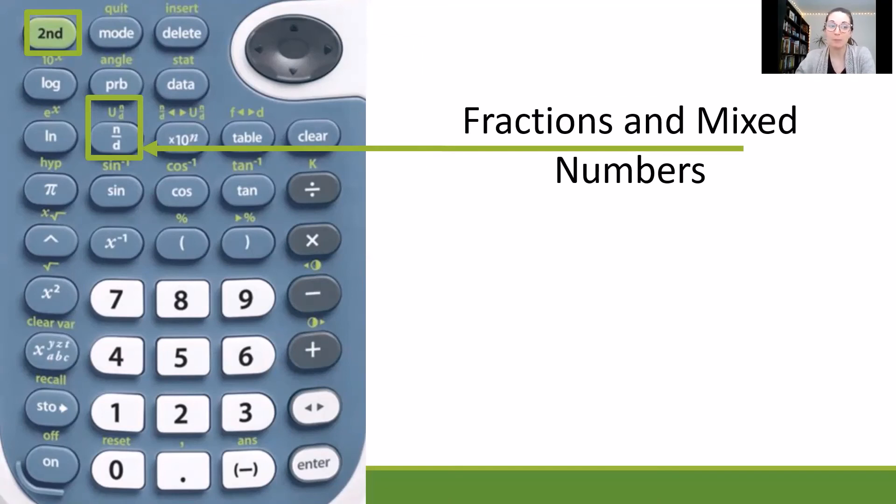I can also make a mixed number by clicking the second button and clicking the n over d button again. And that will give me a whole number at the beginning, and then a numerator over denominator beside it for a mixed number. And I can always use those toggle keys up at the top, the four arrows, to move around and make changes to the different pieces to that.